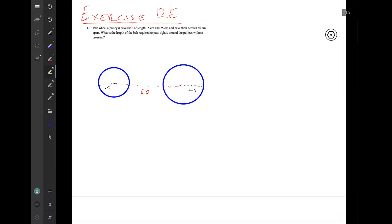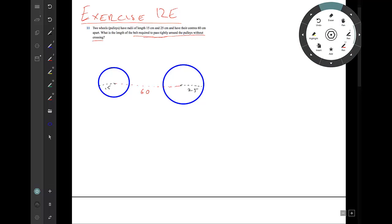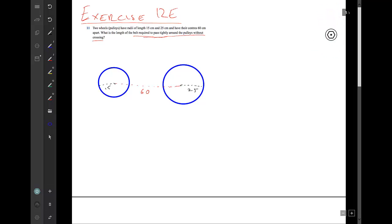Alright, the rest is sort of up to us. We're told we have a belt that's required to pass tightly around the pulleys without crossing. So basically we're looking for something that goes like that, then goes around through there, then comes back to here and goes around and finally stops there.